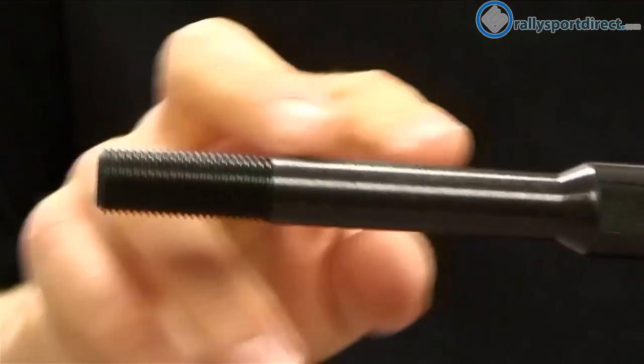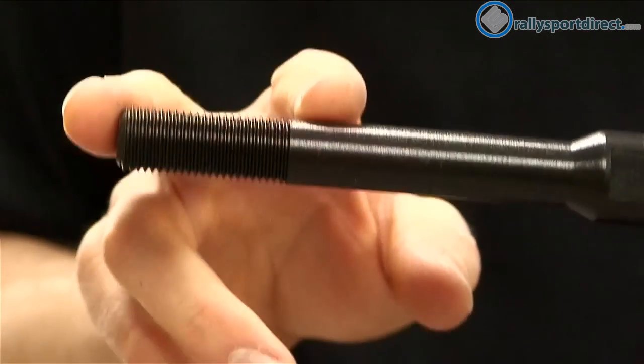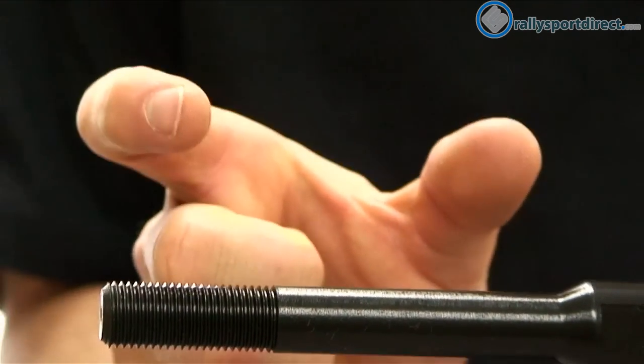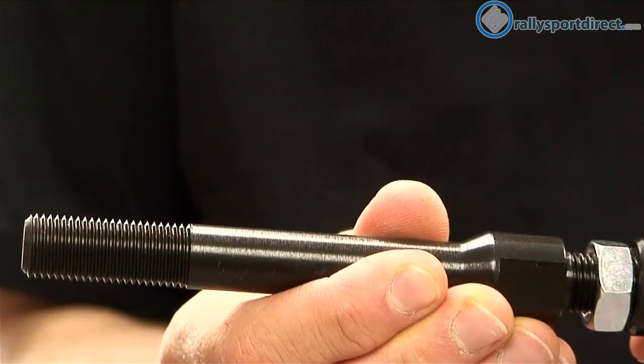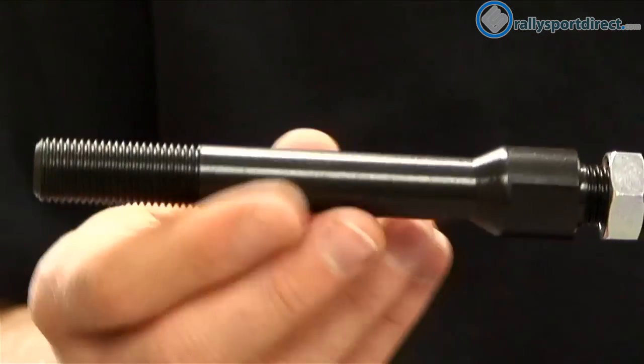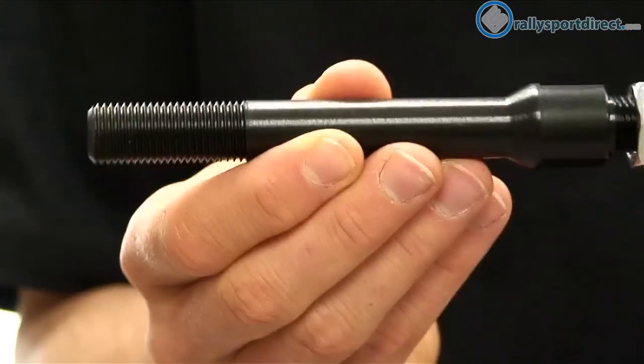Now the nice thing about this threaded end is that you actually have a stock tow hook with these exact same threads, but your stock tow hook is like, you know, this big—it's very small, not very obvious, and doesn't look like this.